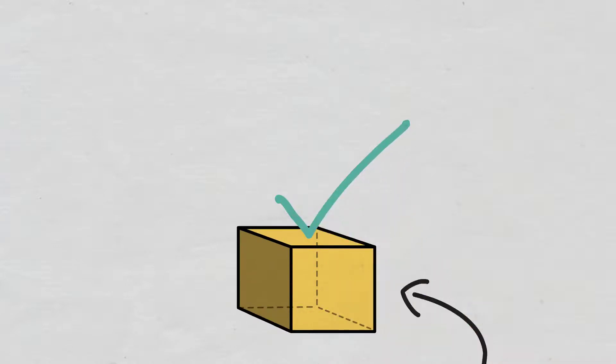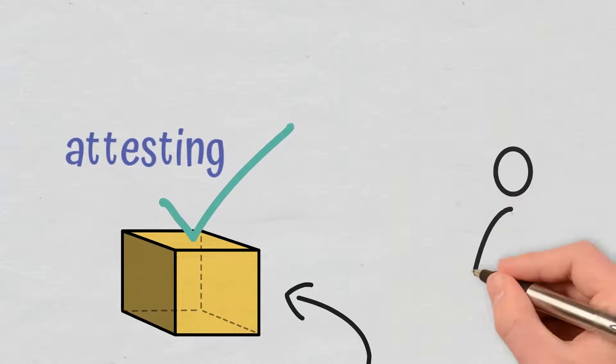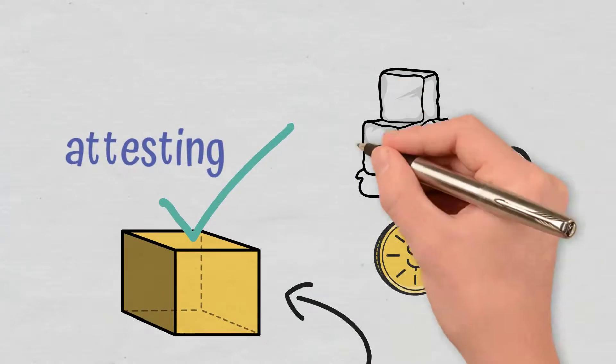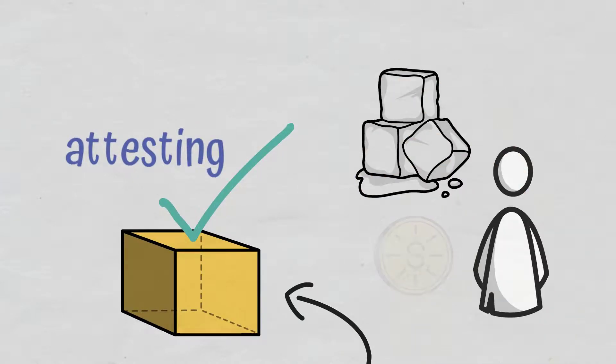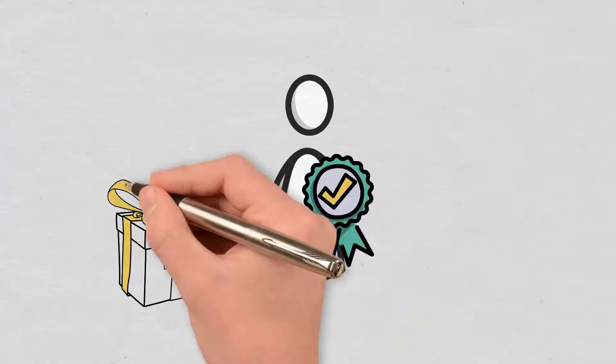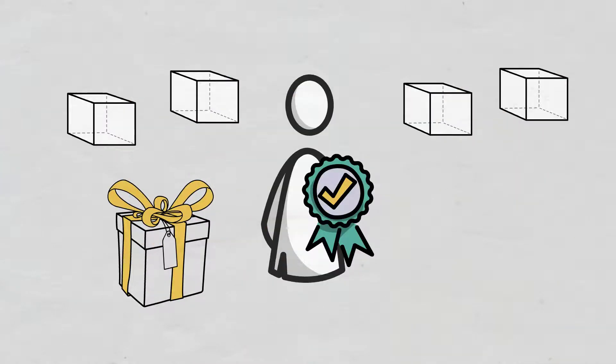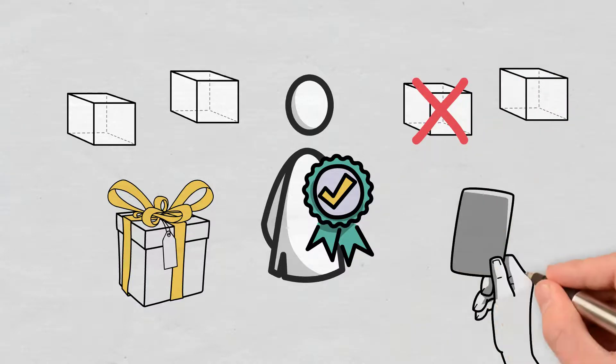The validating process of a block is called attesting. If a potentially malicious block is approved, the validator will lose its stake. Validators receive rewards for creating new blocks and ordering them so that all nodes agree to the condition the network is in. If one of them doesn't do their job, they can be penalized.